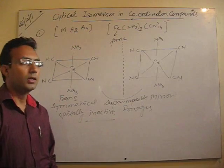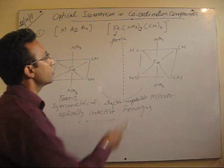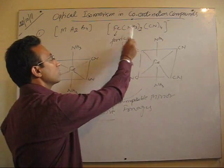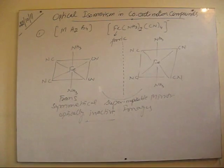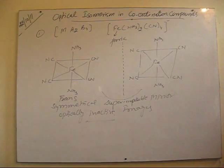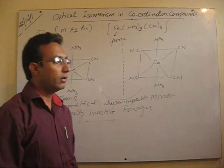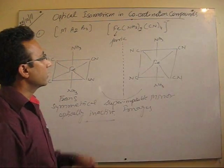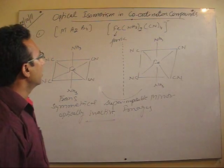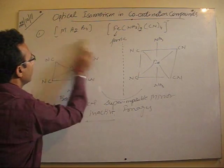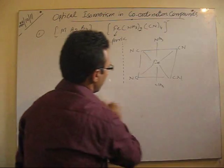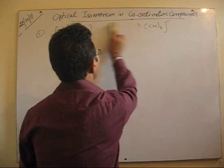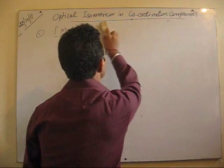This is how you can check the superimposability of different geometrical isomers of a coordination compound. We can take another example to check the superimposability in which we have bidentate ligands.